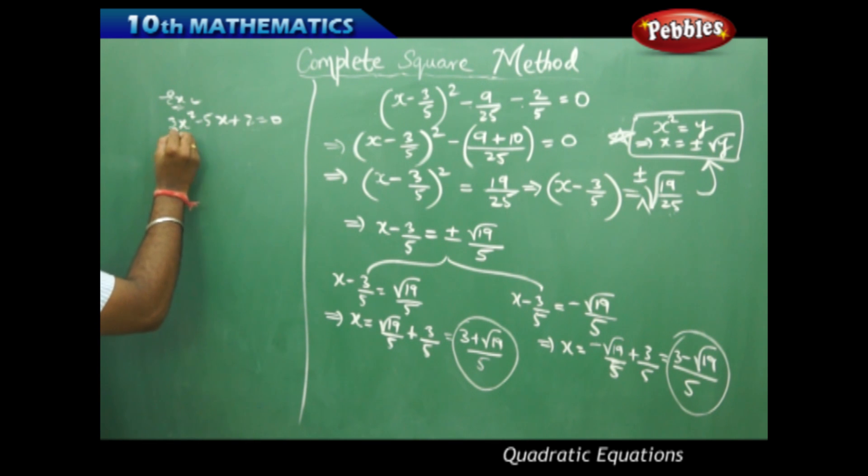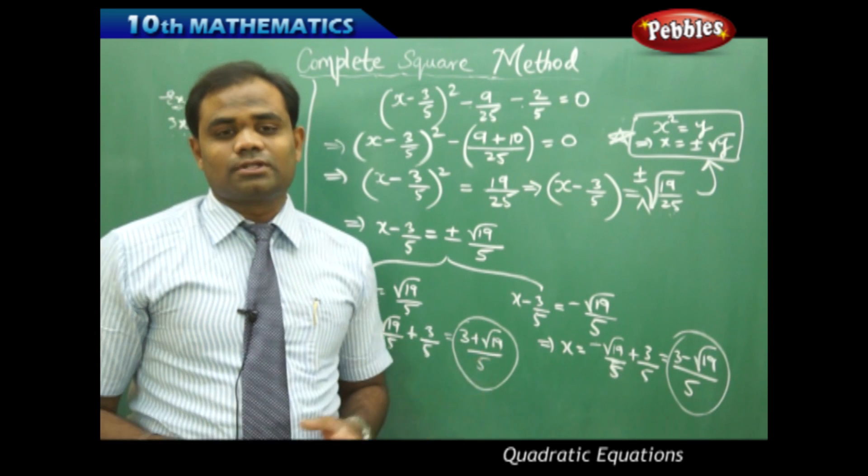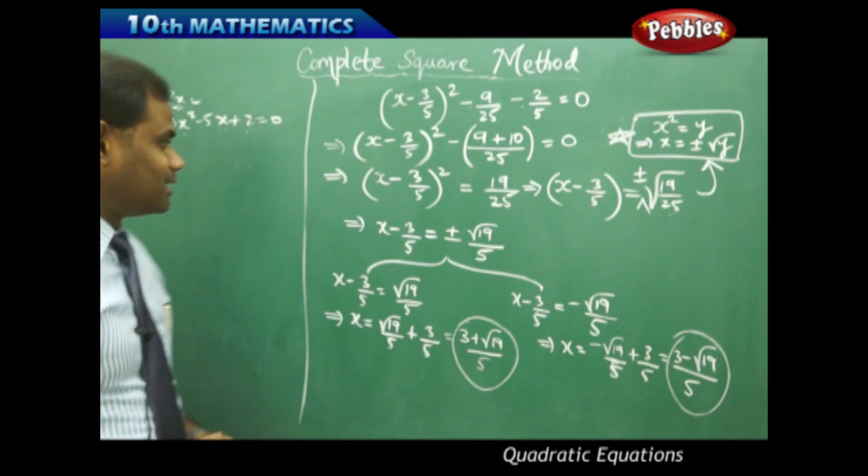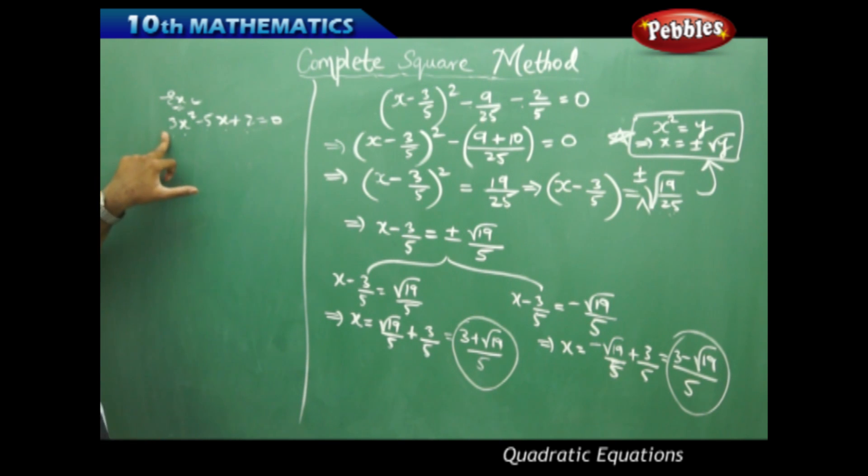For this quadratic equation 3x² - 5x + 2, the first step of using the complete square method is that I need to make the coefficient of x² equal to 1. Therefore I divide the whole equation with 3 so that I get x² - 5/3x + 2/3 = 0.